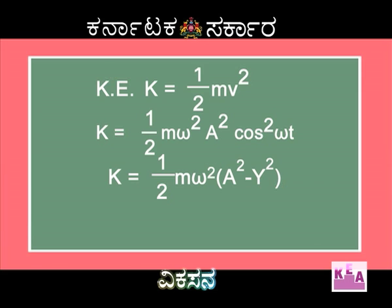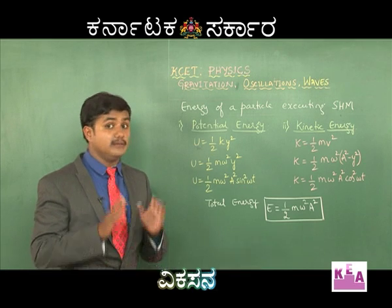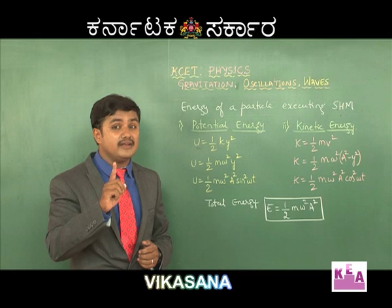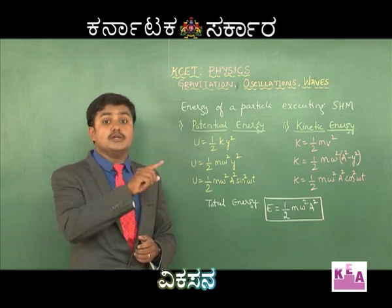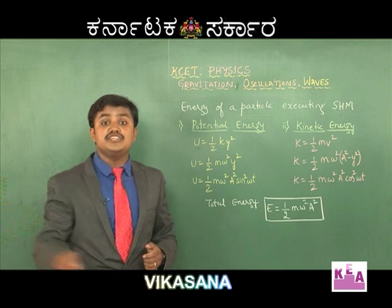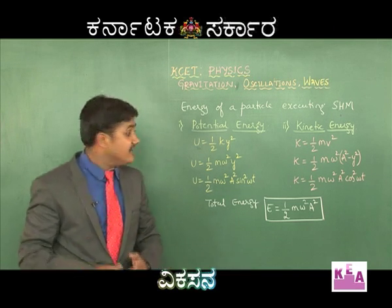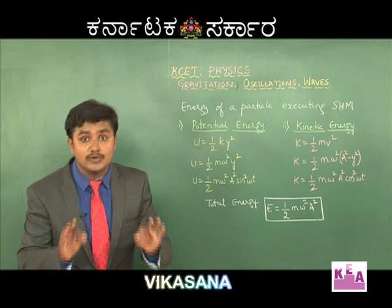If you take the sum of kinetic and potential energies you will get total energy: E = half m omega squared A squared. From this expression it is evident that the total energy of the particle executing SHM is independent of its displacement or position from the mean position. Throughout the journey of the simple pendulum, the energy of the bob remains constant — it is half m omega squared A squared throughout its journey.